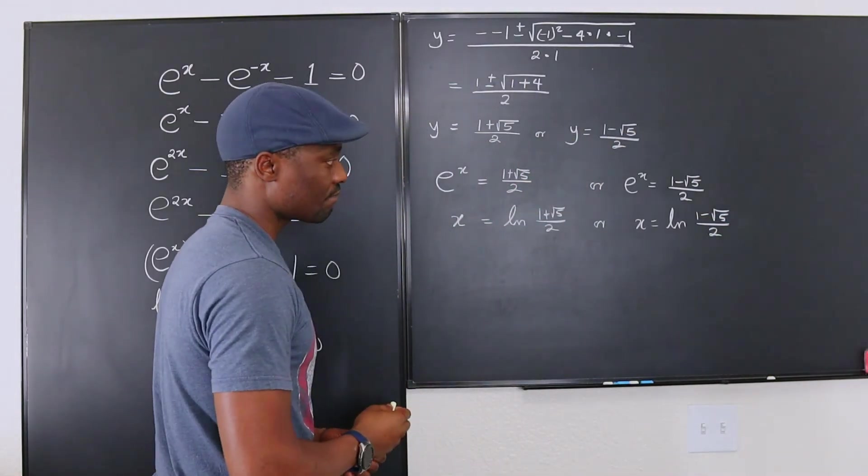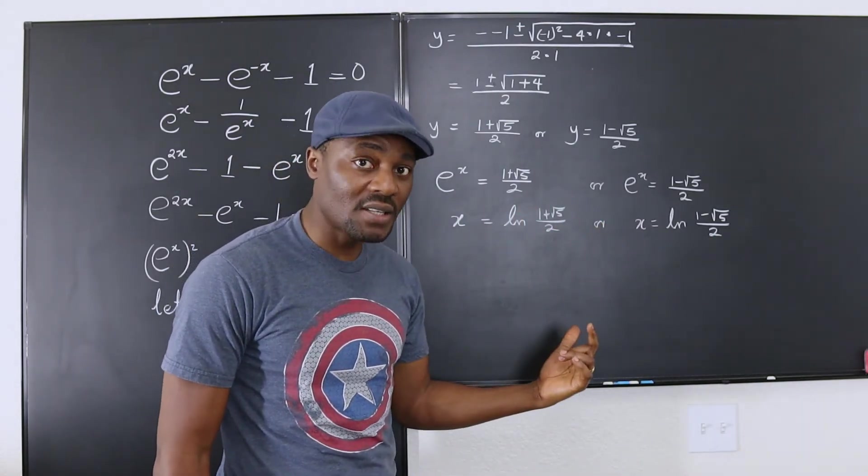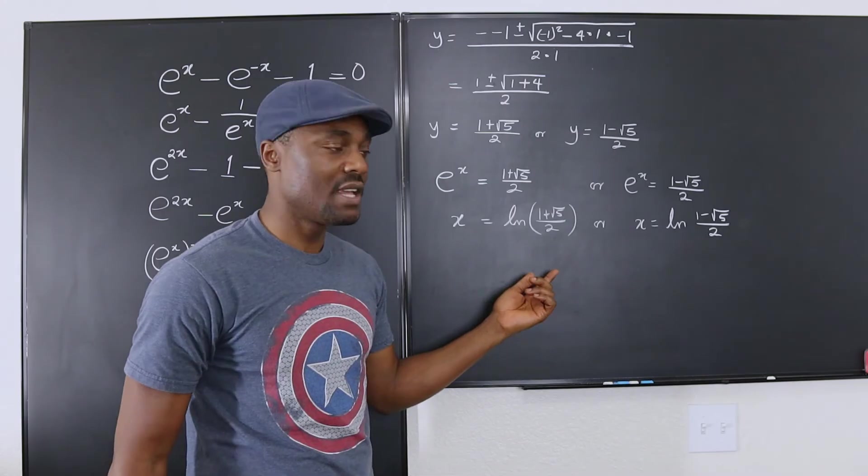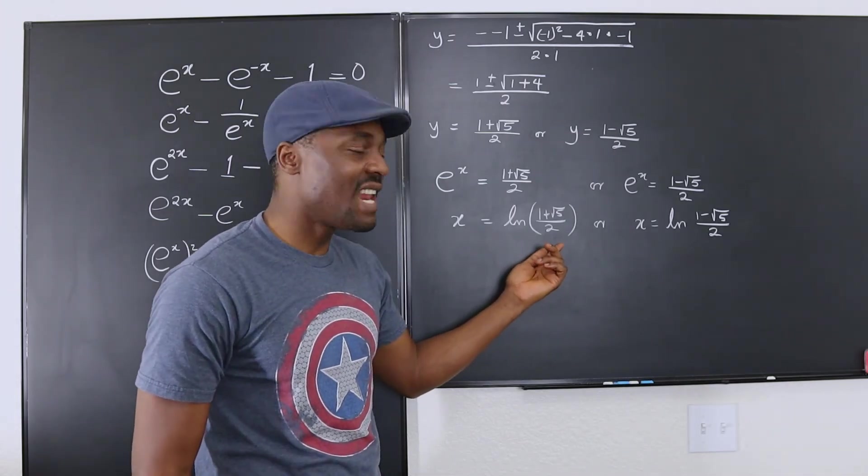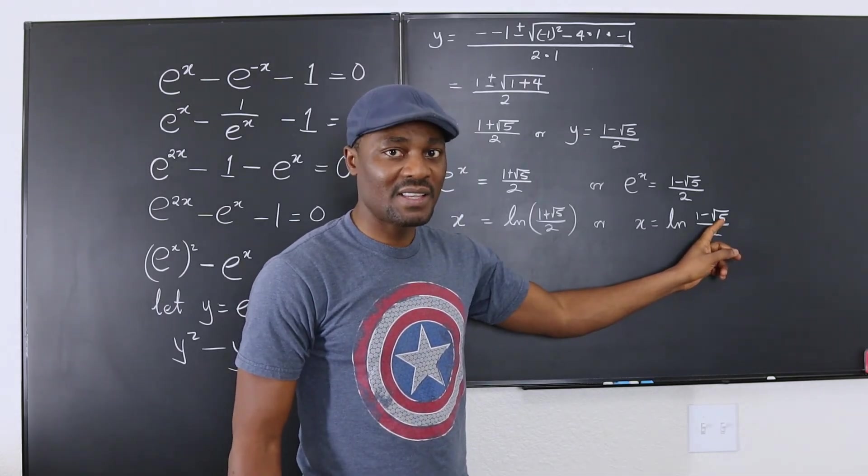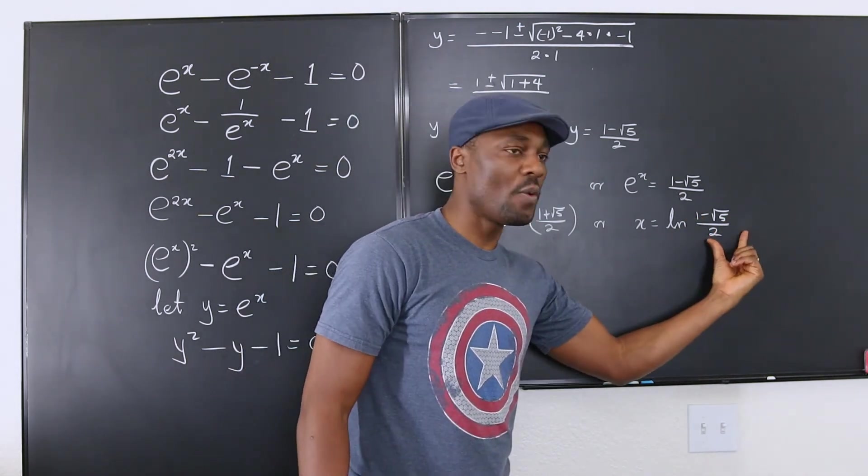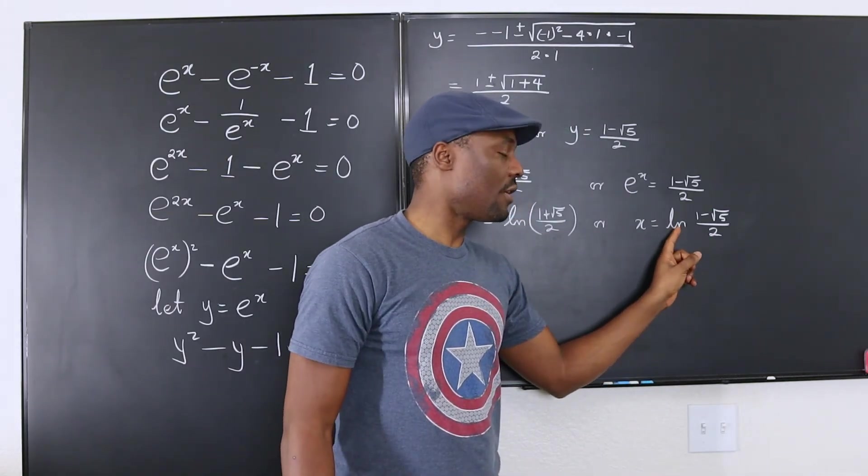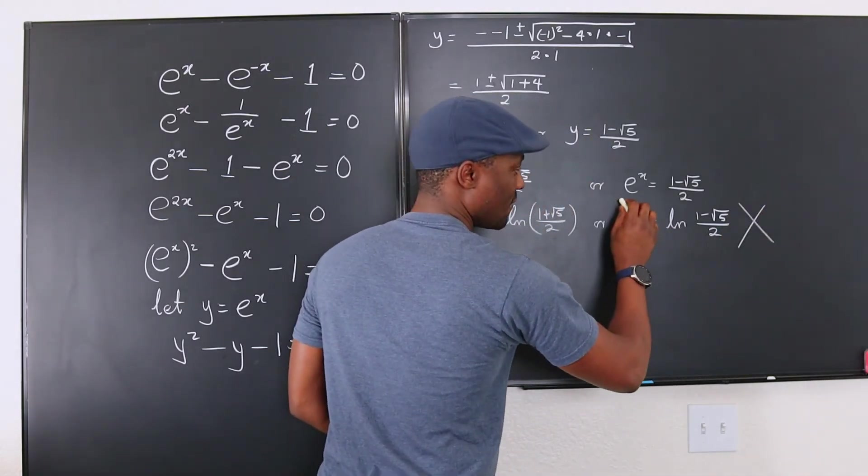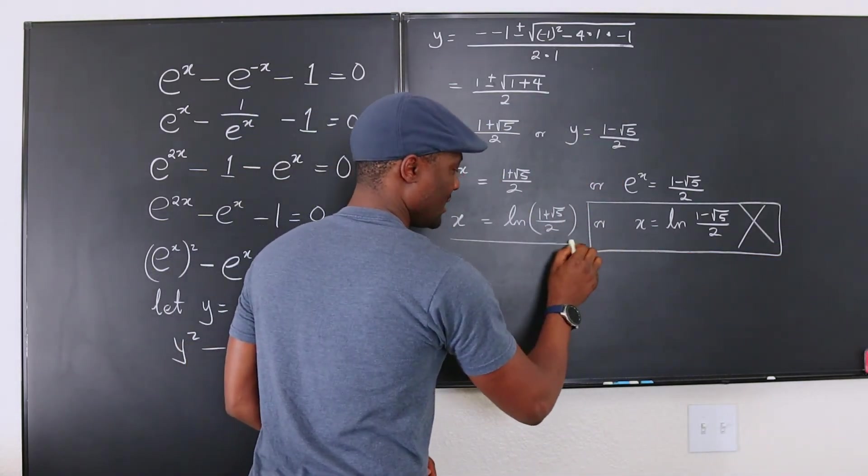That's it. However, both answers are not correct. Because the argument, so the argument is what natural log you're taking. The argument of a natural log function can never be negative. And if you look at this, the square root of 5 is 2 point something. If you subtract that from 1 you already have a negative value here. This will always, this is actually a negative number. And the argument of natural log cannot be negative. So this is not acceptable. This one is not acceptable.